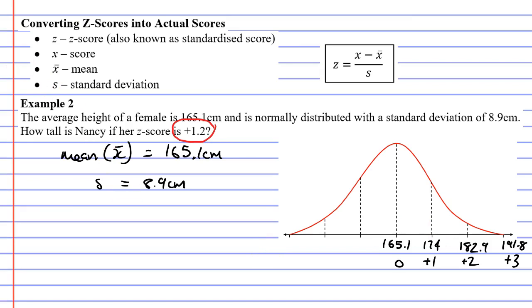So what I'm going to do now is I'm going to grab my formula, z equals x minus x-bar over s, and I'm going to substitute values. My z-score is positive 1.2, so I'll write that as 1.2.